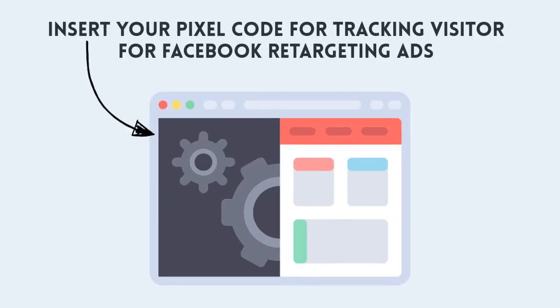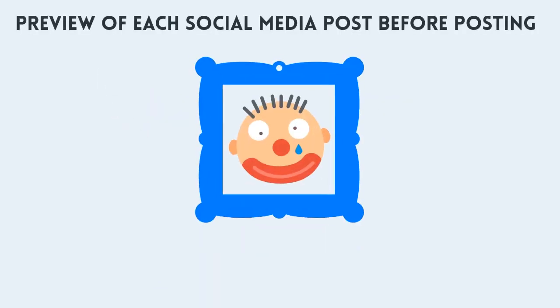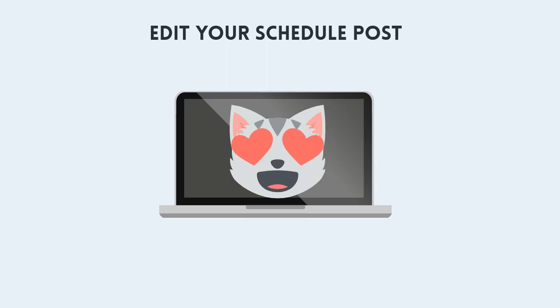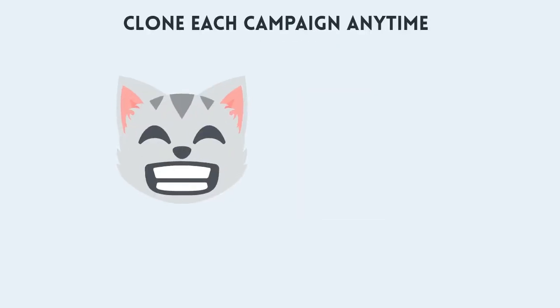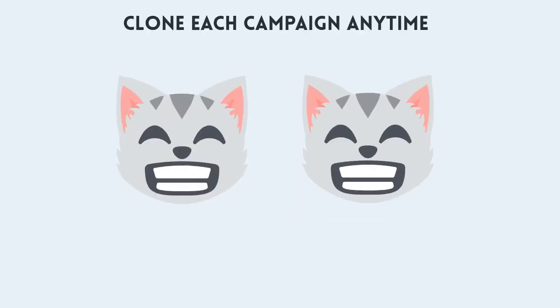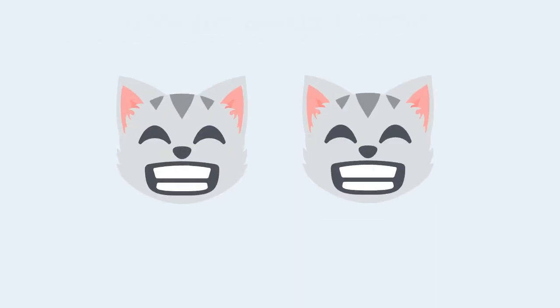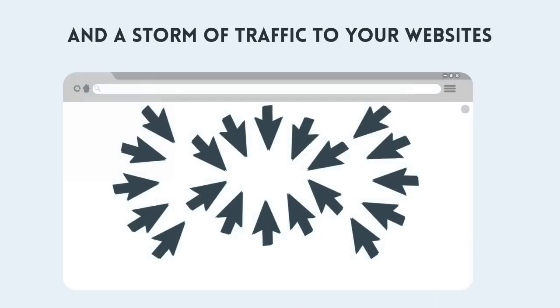Insert your pixel code for tracking visitors for Facebook retargeting ads. Get a preview of each social media post before posting. Edit your scheduled posts. Clone each campaign anytime. Sales and a storm of traffic to your websites.